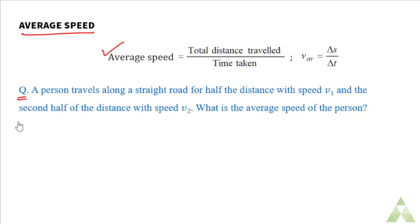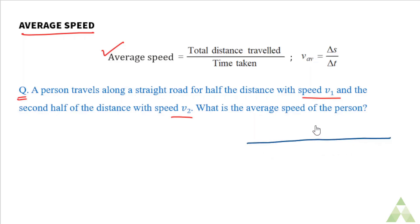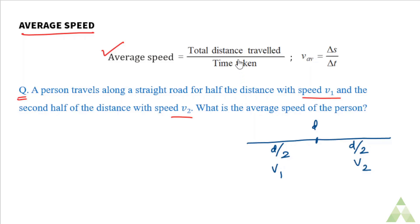Let us look at an example. A person travels along a straight road for half the distance with speed V1, then the second half of the distance with speed V2. What is the average speed of the person? Let us say the total distance covered is D. Average speed equals total distance traveled divided by total time taken, and total distance is D.